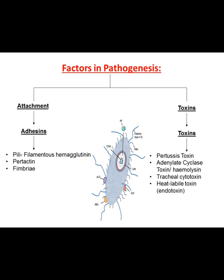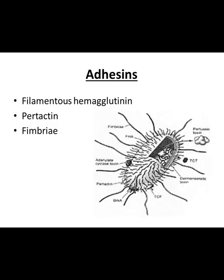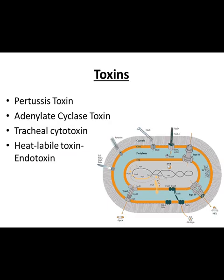The diagram shows factors in pathogenesis: one is attachment, and the other is toxin. For adhesion to underlying cilia, adhesins are pili — filamentous hemagglutinin — pertactin and fimbriae. By these adhesins the organism attaches to the cilia. Toxins are: pertussis toxin, adenylate cyclase toxin, tracheal cytotoxin, and endotoxin.